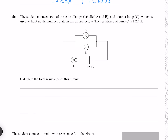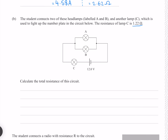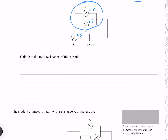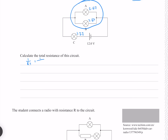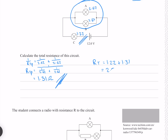The student connects two headlamps A and B in parallel, and lamp C (resistance 1.22 ohms) in series. Calculate the total resistance. For the parallel branch of A and B at 2.62 ohms each, using 1/R_total = sum of 1/R gives 1.31 ohms. Adding the series lamp C: 1.31 + 1.22 = 2.53 ohms total.